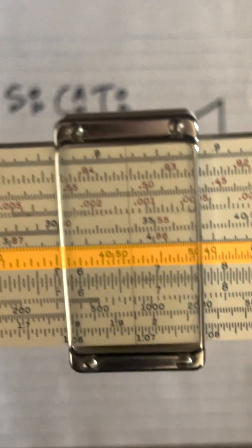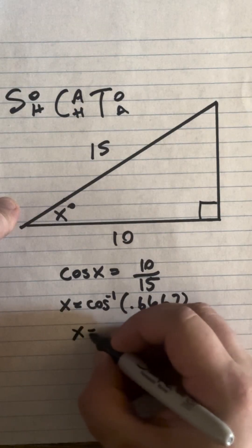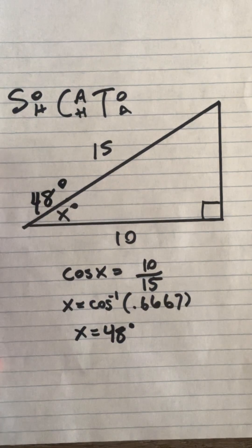And if you look at the cosine scale, you'll see that it's 48 degrees. So x equals 48 degrees. And that's our answer.